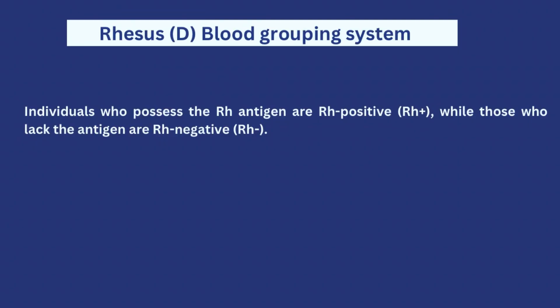The second system is the Rhesus blood grouping system, which is dependent on the presence or absence of the Rhesus factor, or D antigen, on the surface of the red blood cells. If someone has the D antigen present, they are Rhesus positive; if they do not have it, they are Rhesus negative. The combination of the ABO and Rhesus blood grouping systems is what gives you all the blood types like A negative, B positive, O negative, and O positive.